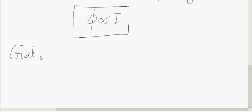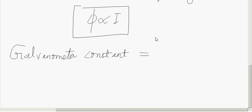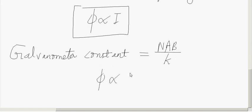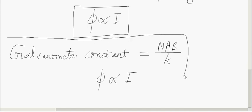Two things are very important here. One is the galvanometer constant, which is equal to NAB/k. The other is that phi is proportional to I — the deflection produced depends on the current flowing through the coil.